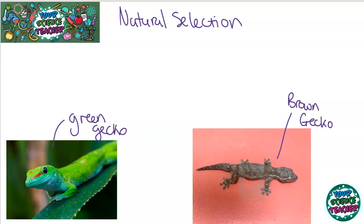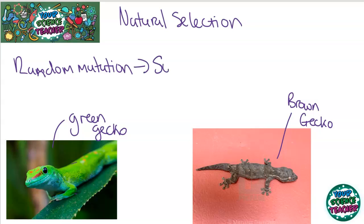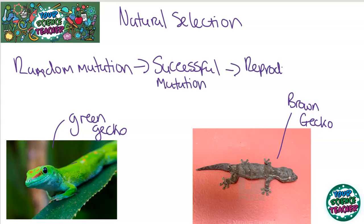Natural selection works by starting off with a random mutation. For example, if all geckos started off green and then suddenly there was a brown gecko born, this would be a random mutation occurring. This random mutation has to be successful to stick. If it is a successful mutation, then the species will go on to reproduce, and this will cause the gene to be passed on.